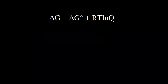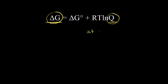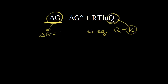In the previous video, we looked at the relationship between the change in free energy, delta G, and the reaction quotient Q. We plugged in different values for Q and saw how that affected our answer for delta G. The sign of delta G told us if a reaction was spontaneous or not. We also said that at equilibrium, Q, the reaction quotient, is equal to the equilibrium constant K. We plugged K into the equation and solved for delta G. Delta G was equal to zero, so at equilibrium the change in free energy is equal to zero.